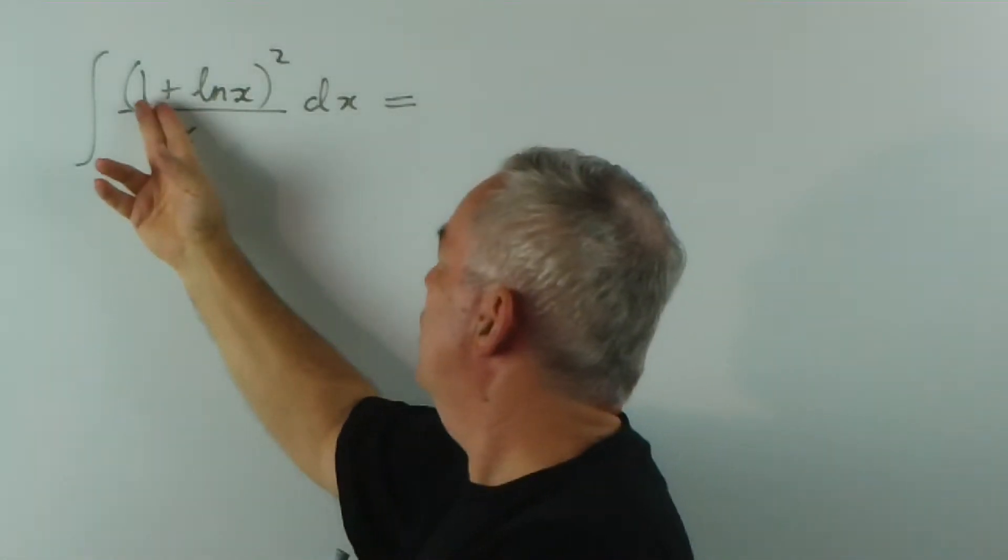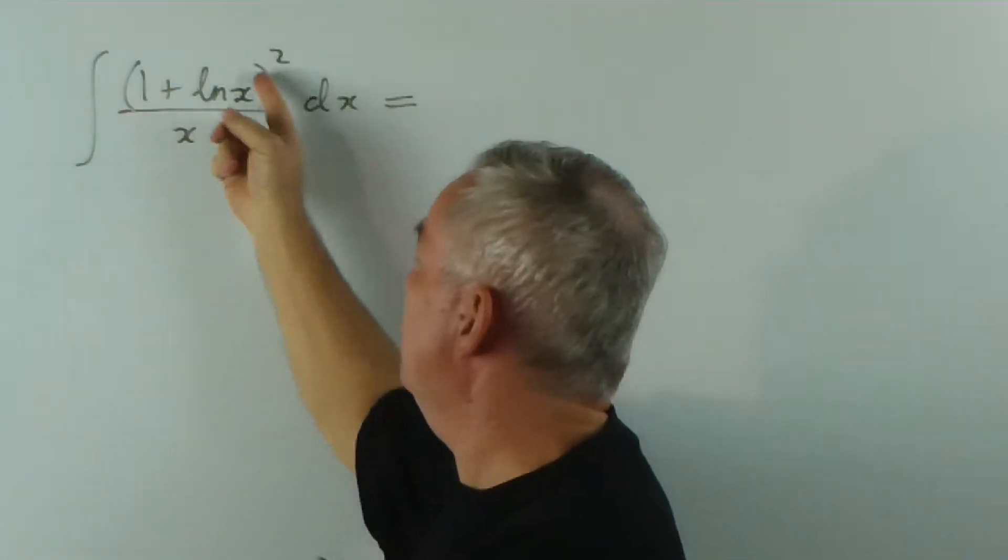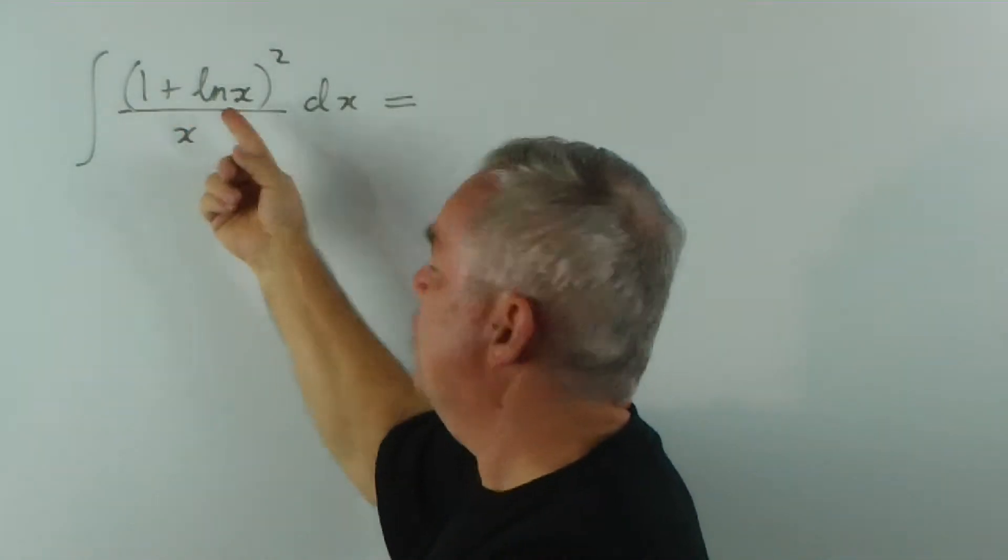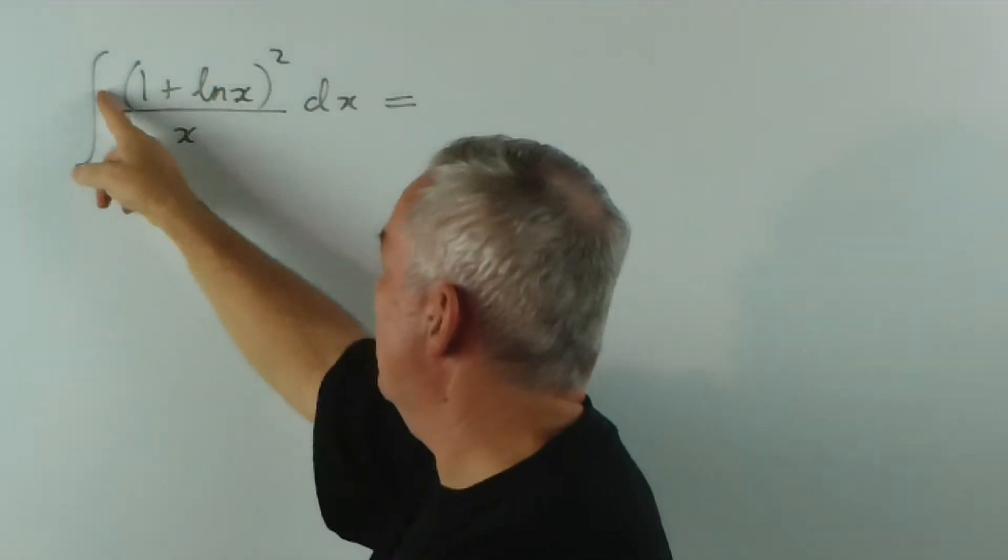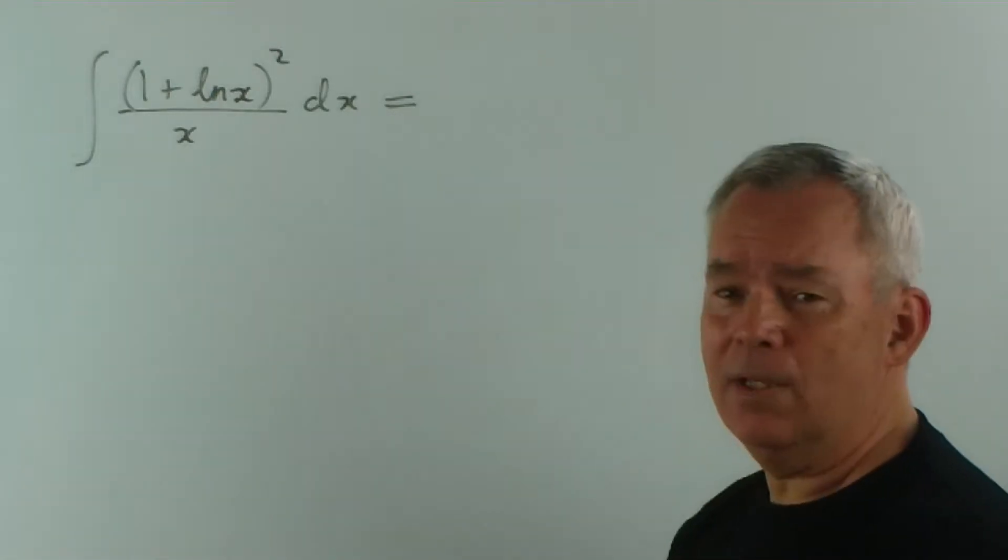If we took... we have here a function, by the way, to some power. If we took the derivative of that function, what do we get? Well, the derivative of one is zero, and the derivative of log is one on x, which, surprisingly, is what we have out the front. We think, aha, we're onto something. This is a pattern we might recognize.